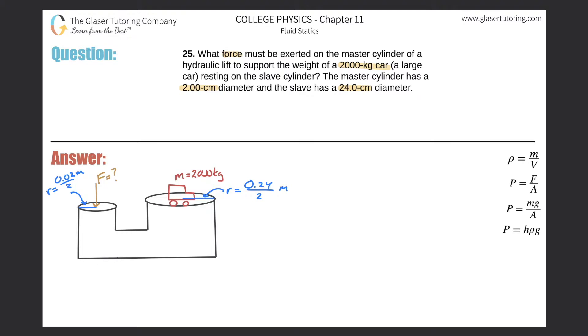So we are asked to find the force on the master cylinder. Now we know that whatever pressure is created from this force being applied over this area will equal the pressure that is experienced under the slave cylinder.